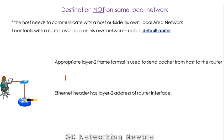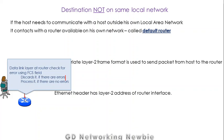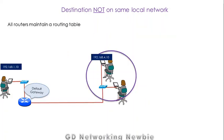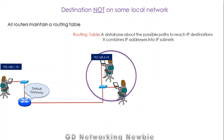In this frame, we have the packet that has to be sent to some other network outside the local area network. The router receives that frame and checks the FCS field — the frame check sequence — to determine if the frame has any errors. If there are errors, that packet will be discarded. If there are no errors, the frame will be processed. Every router maintains a routing table that contains a database about possible destinations.